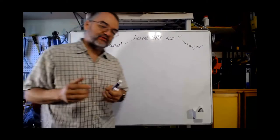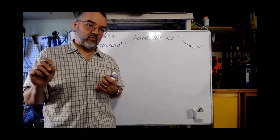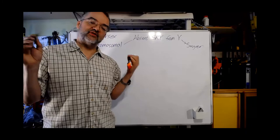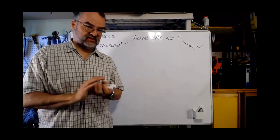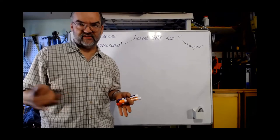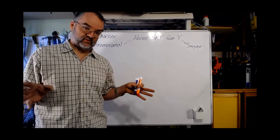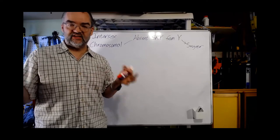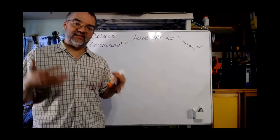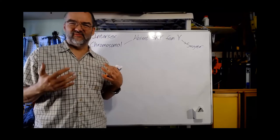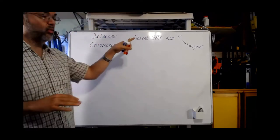In Swyer syndrome, the person will develop the internal structures — the Mullerian ducts do become uterus and fallopian tubes — but the gonads do not become normal ovaries. Instead, you end up with what are called streak gonads, which are undifferentiated and can cause serious problems since they don't make sex hormones. Since there's no testosterone or estrogens from either ovaries or testes, the individual does not usually develop secondary sex characteristics at puberty. They'll have female external genitalia at birth, but during puberty do not develop breasts, hip development, or much pubic hair.